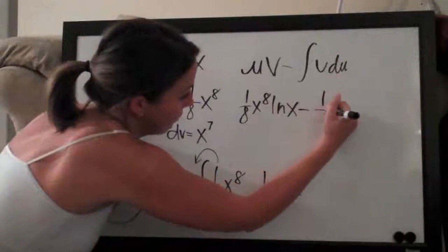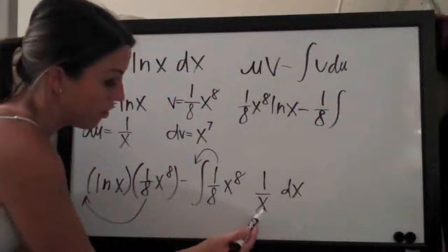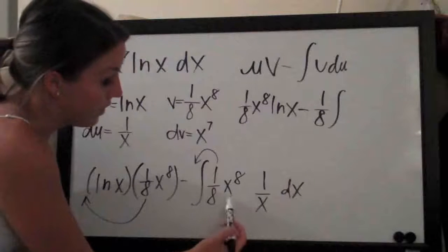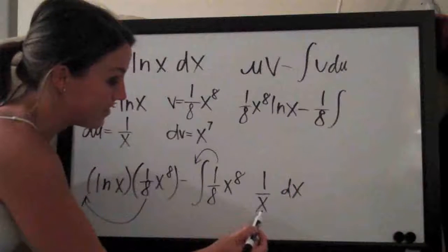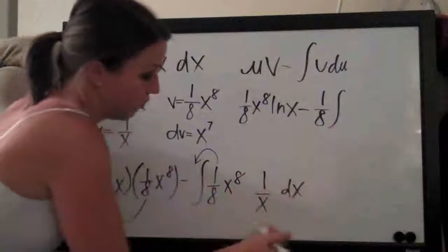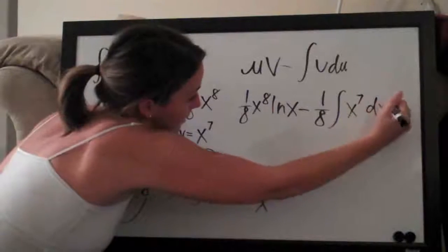So we'll bring that out in front and we'll be left with the integral of x to the eighth over x which, because we have eight x's in the numerator and one in the denominator, will simplify to x to the seventh. So x to the seventh dx.